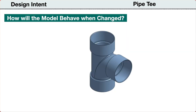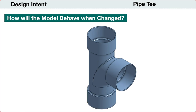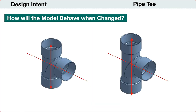The location of the center of the transition will remain the same relative to the vertical ends. So how should we expect the model to behave when it is changed? We should be able to change the length, and the rest of the features should remain the same, including the center location of the transition along its relative length.